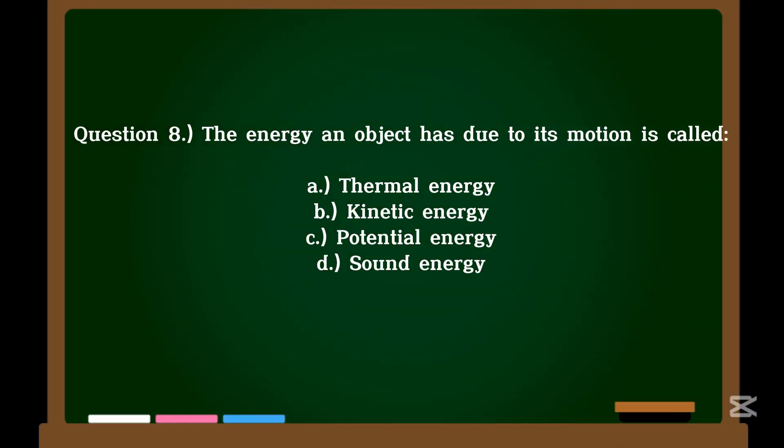Question 8. The energy an object has due to its motion is called? A. Thermal energy. B. Kinetic energy. C. Potential energy. D. Sound energy.